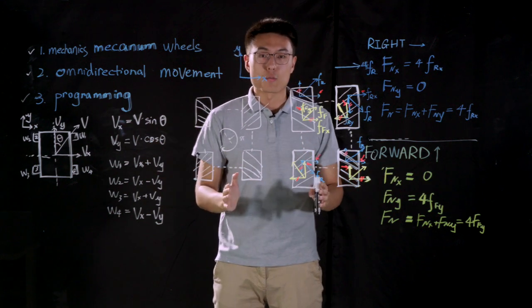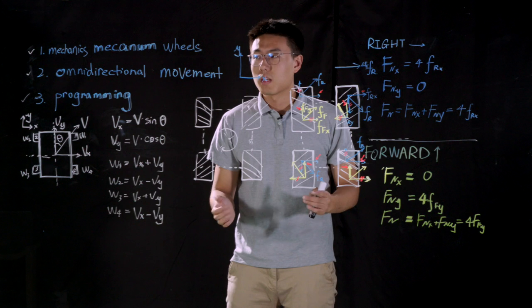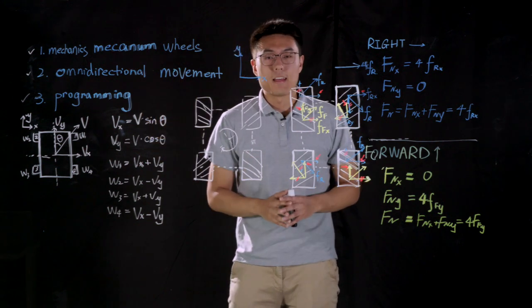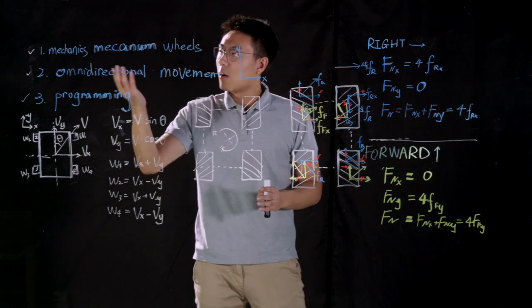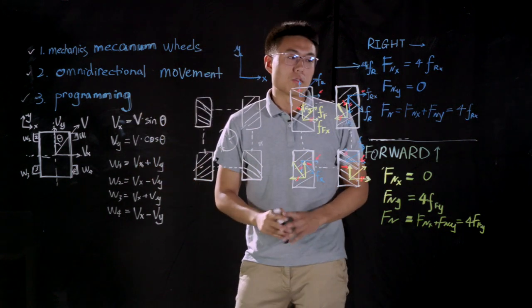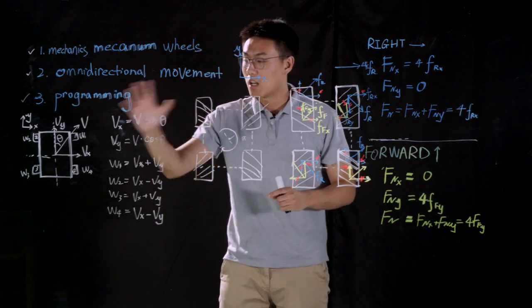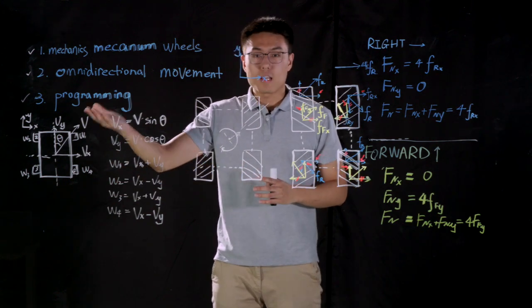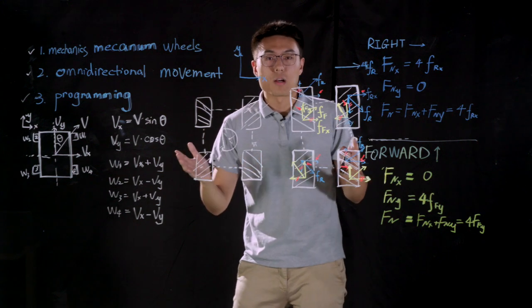Now let me do a very quick recap of today's lesson. In the first place, we learned what the Mecanum Wheel is. Then, we studied the omnidirectional movement of S1 by doing some force analysis and velocity analysis. And in the end, we used some programming modules in the app to realize some very interesting projects.